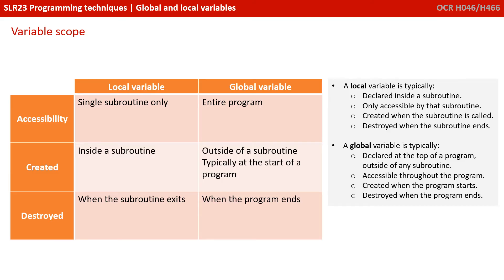A global variable, on the other hand, is typically declared at the top of a programme outside of any subroutines, accessible therefore throughout the programme, created when the programme starts and destroyed when the programme ends.